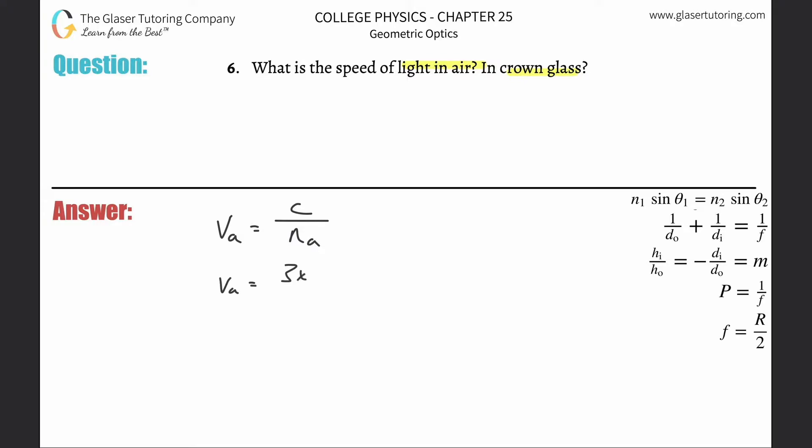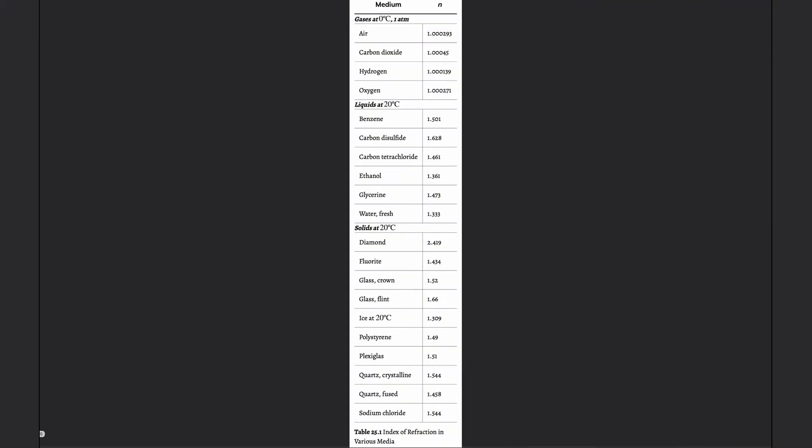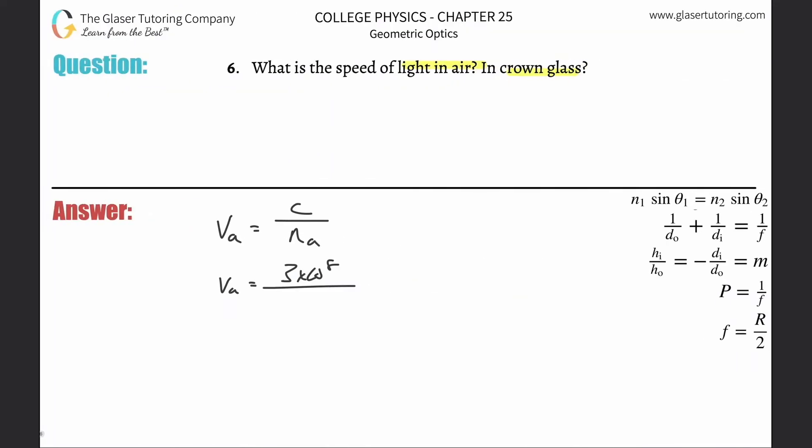So what we need to do is I'm going to round the value up here of speed of light. If you want to use a more exact value, go for it, but just be aware of that. Now I need to know the index of refraction for air, so we go back and look it up on our table. That's basically one with three zeros, 1.000293.